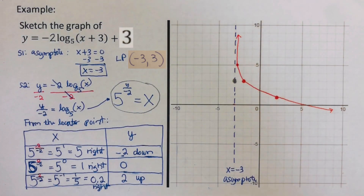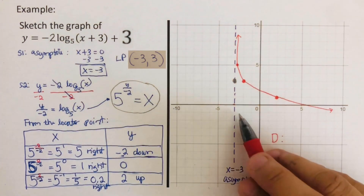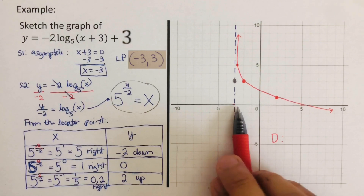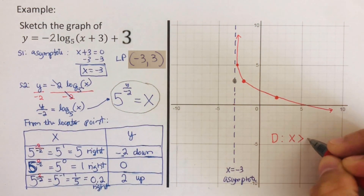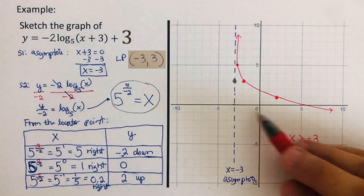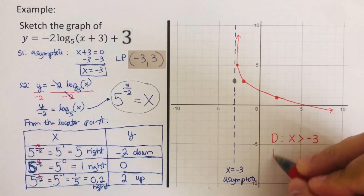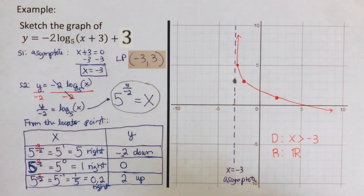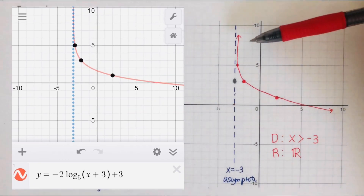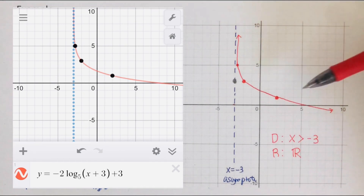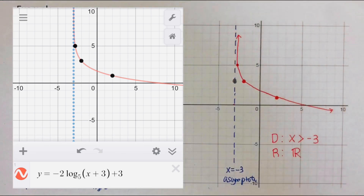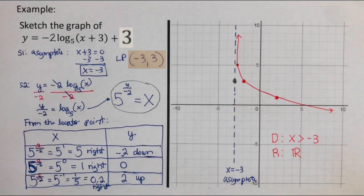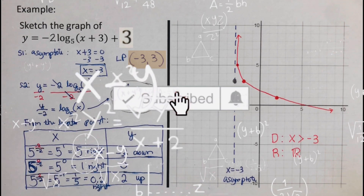The domain for this problem is all x greater than negative 3, since the graph cannot touch the asymptote at x equals negative 3. The range is all real numbers. On the side you can see the Desmos version of this graph — the paper version and the Desmos version are the same. Did you get the same answers? If you find this video helpful, hit like and subscribe for more math videos!